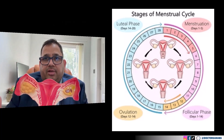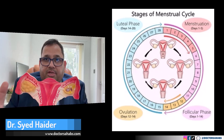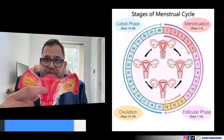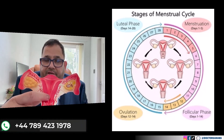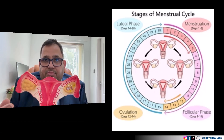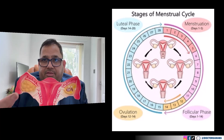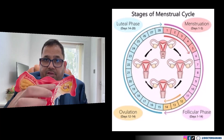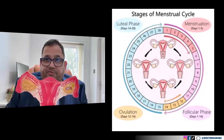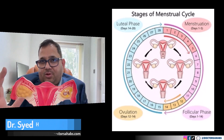The menstrual cycle has four phases. The first phase is called the menstrual phase, in which the endometrial lining is shed and bleeding occurs out through the vagina. The second phase is called the follicular phase, in which the follicles of the ovary are stimulated and prepared for ovulation. This process is linked with female hormonal actions.